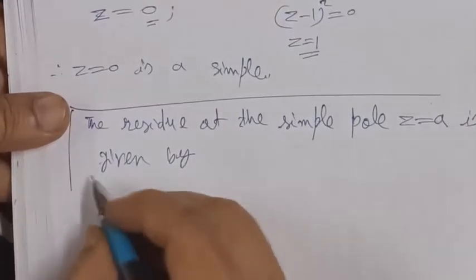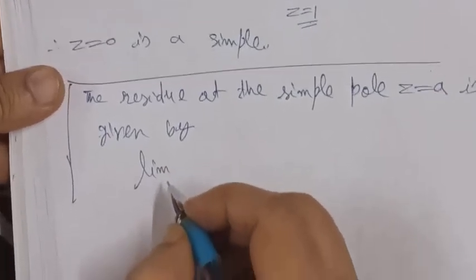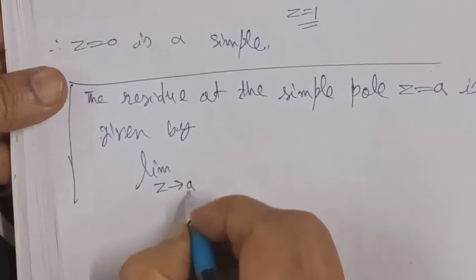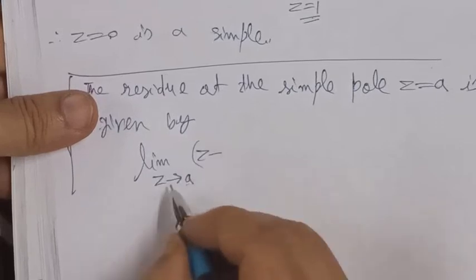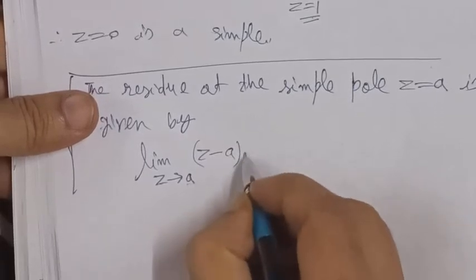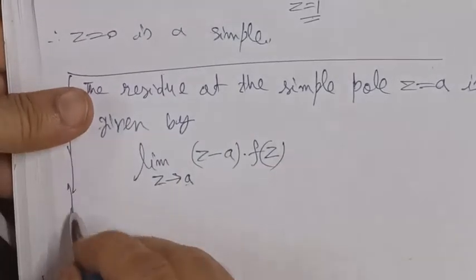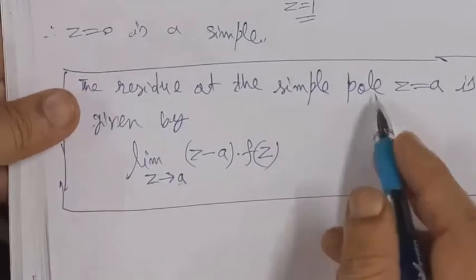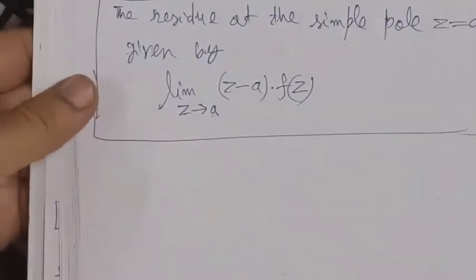The limit as z tends to a, where a is zero in our problem, multiplied by (z - a) times the function. This limit gives us the residue. For a simple pole at z = 0, the residue formula applies.